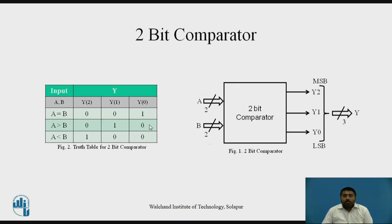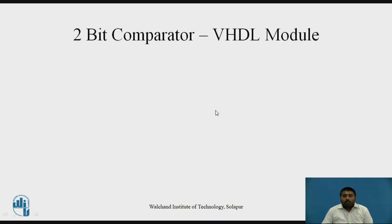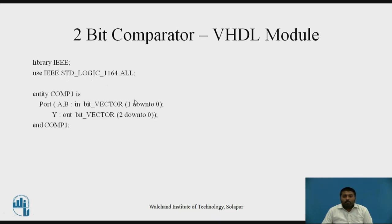Now, for this behavior we are going to write the VHDL code. We know that for every VHDL code there are three important parts. First is the library declaration — we include library IEEE and the package STD_LOGIC_1164. The second important part is the entity declaration, where we write the different inputs and outputs associated with your design. In this comparator, we have two inputs A and B, each of 2-bits, so they are declared as bit vectors with range 1 down to 0.